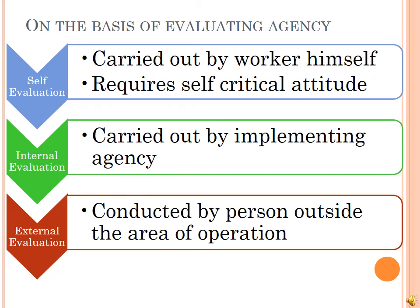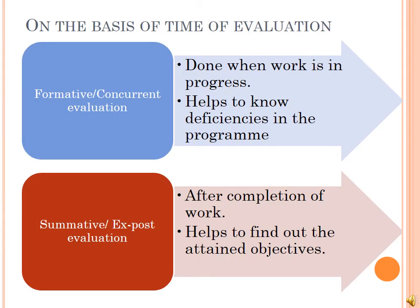The third categorization of evaluation is on the basis of evaluating agency. First is self evaluation, which is carried out by the worker himself. This requires a self-critical attitude, which is essential for an extension worker. Second is internal evaluation, which is carried out by the agency responsible for planning and implementation of the program. Third is external evaluation, which is conducted by a person or committee outside the area of operation.